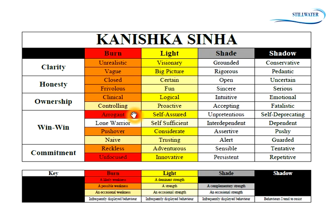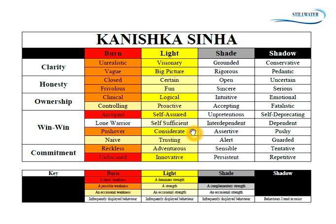Similarly, innovation is a strength — I'm an innovative thinker — but because I don't persist with ideas too much and just move on to the next one, I can become unfocused. The shade column tells me the strengths I need to develop. If I develop those shade strengths, the weaknesses in the burn column are less likely to show up. For example, if I'm a considerate person and adaptable, people can take advantage of me and I become a pushover.